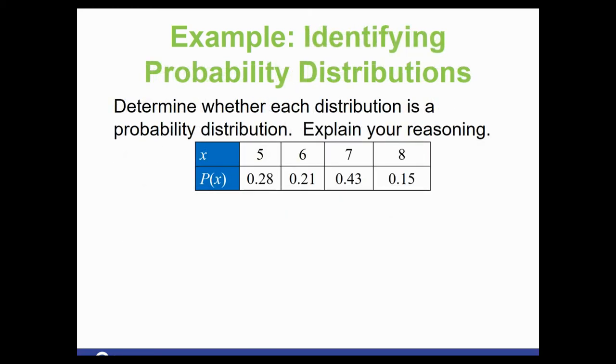Let's try it again. This one says we've got 0.28. That's between 0 and 1. 0.21. That's between 0 and 1. 0.43 and 0.15. All of them are within the range of 0 to 1. So we've met that criteria. Now let's add them up. Putting little plus signs in between. Add all four of those numbers up. And it's too big. You should get 1.07. So this is not a probability distribution.